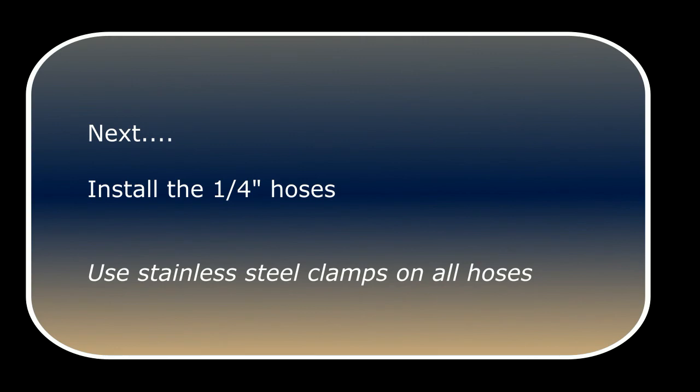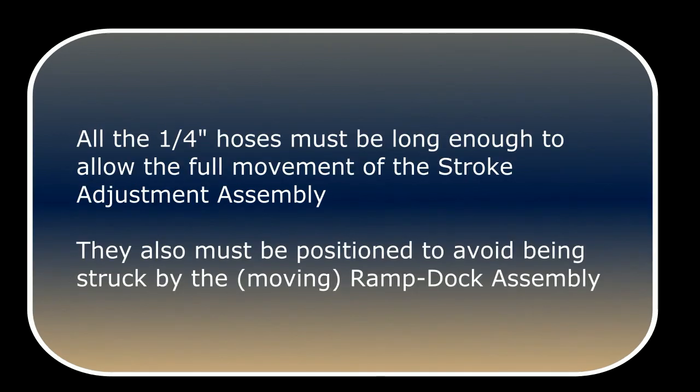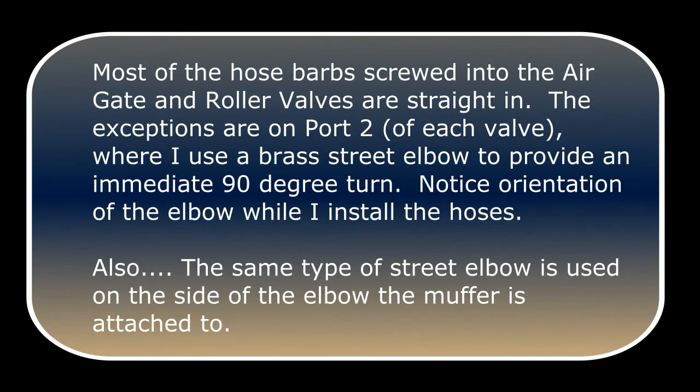Next we'll install the quarter inch hoses. Use stainless steel clamps on all hoses. All the quarter inch hoses must be long enough to allow the full movement of the stroke adjustment assembly. They also must be positioned to avoid being struck by the moving ram dock assembly. Most of the hose barbs screwed into the air gate and roller valves are straight in. The exceptions are on port two of each valve where I use a brass street elbow to provide an immediate 90 degree turn. Notice the orientation of the elbow while I install the hoses. Also, the same type of street elbow is used on the side of the elbow the muffler is attached to.